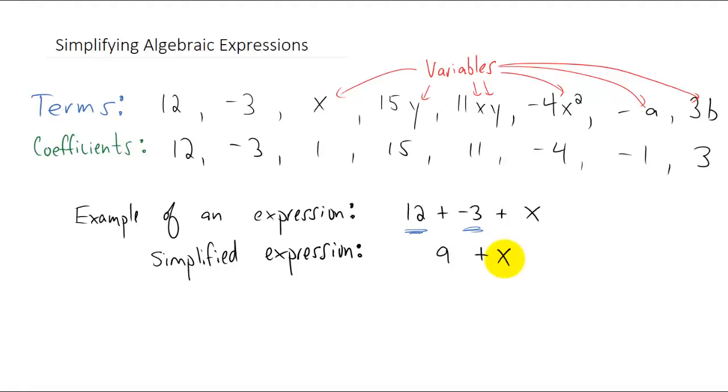So we can simplify twelve plus negative three plus x into just nine plus x. The mathematical way of saying what we just did is that we combined our like terms, twelve and negative three, to make nine.